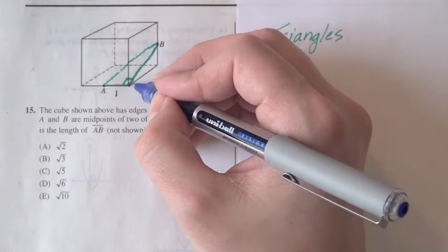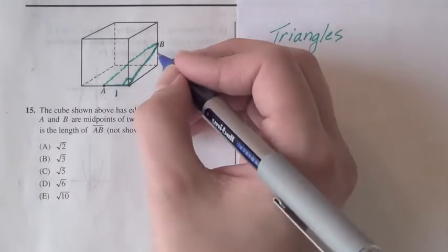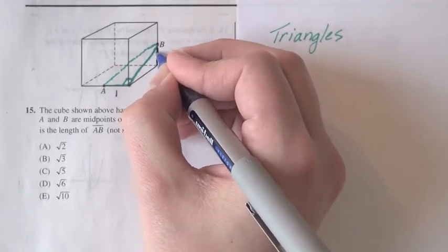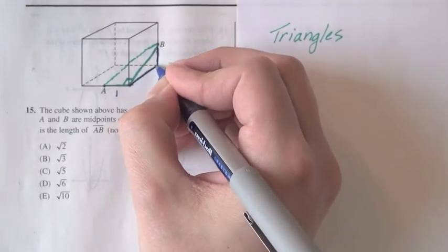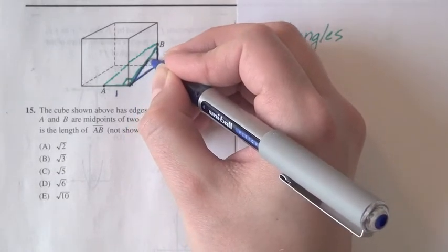This one's a little easier to see. This leg that we're interested in is the hypotenuse of a second right triangle, this one. This one just lies right on the face where point B is.